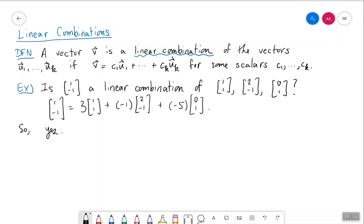What we can ask is, is that the only way to do this? Is that the only way to write 1 negative 1 as a linear combination of these three vectors? And the answer is no. That's not the only way to do it.